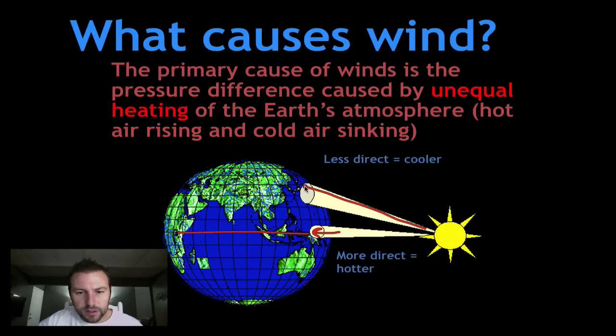Versus a place like us, right here at higher latitudes. When the sun's energy strikes here, it strikes a bigger area, so it's less intense. So it ends up actually being a little bit cooler. More direct, hotter. Less direct, less intense is going to be cooler.